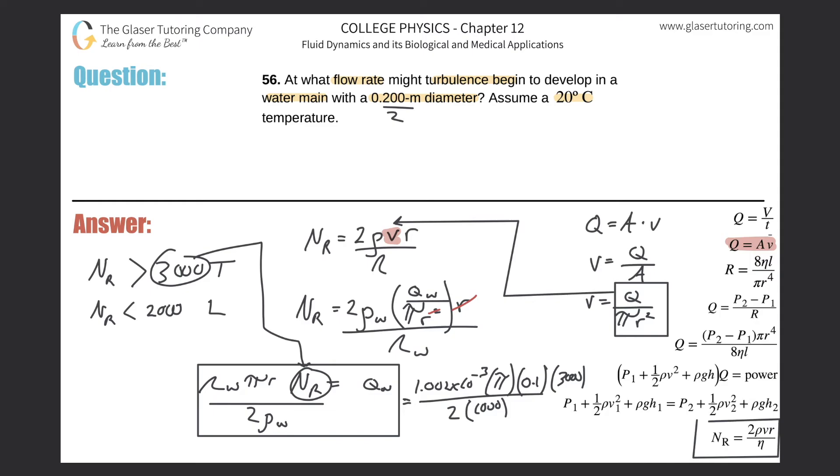Then multiply that by 3,000, and then divide this whole thing by 2 times the density of the water, which is 1,000. And then we're going to get the value of the flow rate, just at the point of which it starts to become turbulent. So 1.002 times 10 to the minus 3, multiplied by pi, multiplied by 0.1, multiplied by 3,000, then divided by parentheses 2 times 1,000. And here we go. So the volume flow rate is going to be 4.72 times 10 to the minus 4. And this is in terms of cubic meters, cubic meters per second.